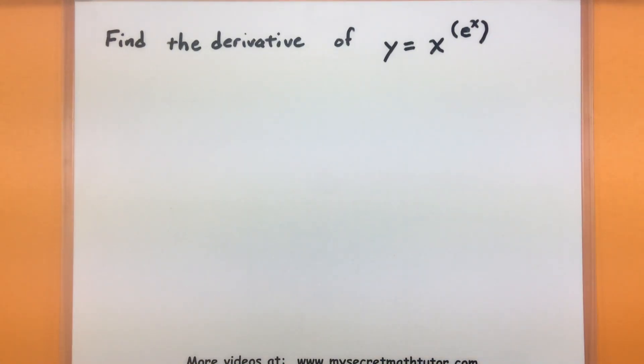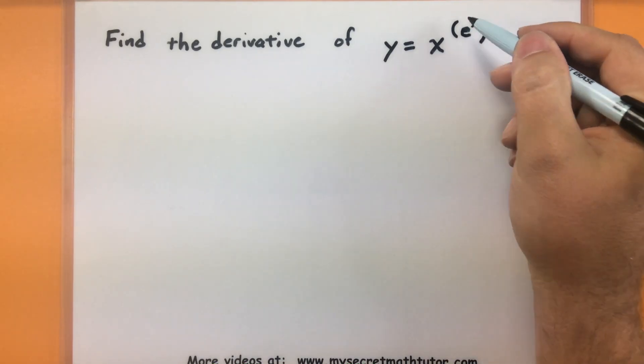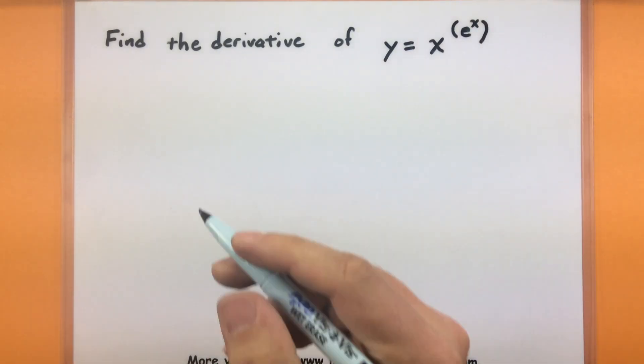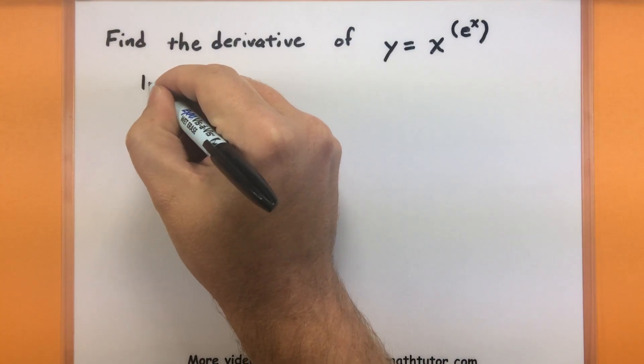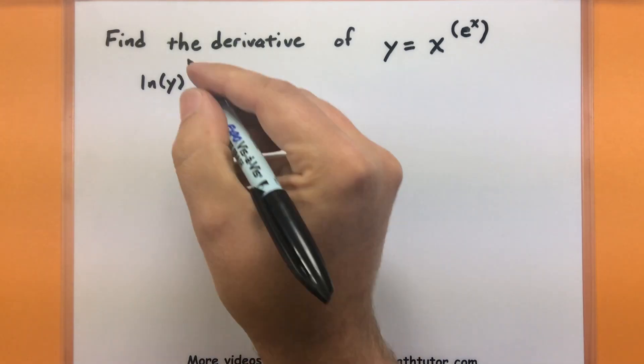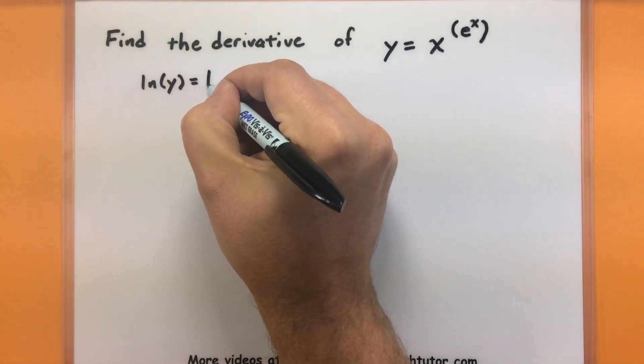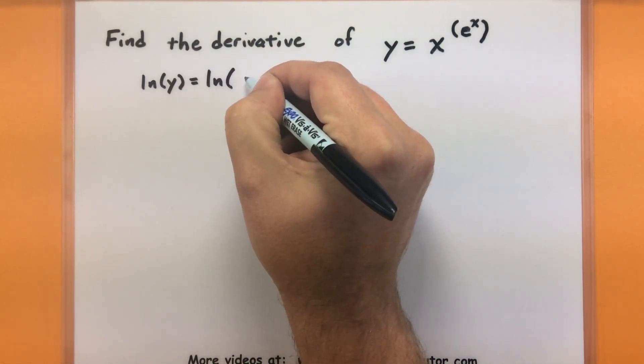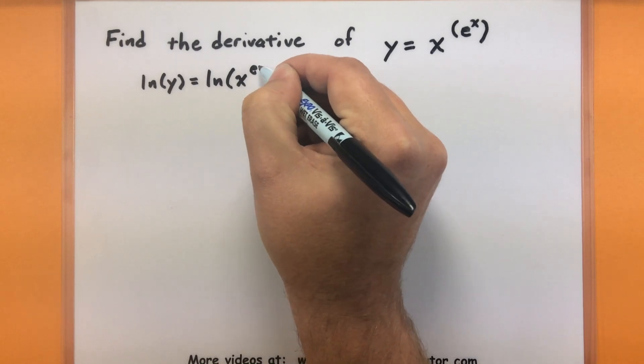So we're going to give this a go by finding the derivative of y equals x raised to the power of e to the x. And of course that looks like a fairly complicated function. It's raised to a power and that power is another function in itself. But we're going to start off and we're actually going to just take the derivative of both sides. So I'm sorry, I'm going to take the natural log of both sides, so the natural log of y, and I'm going to take the natural log of x to e to the x.